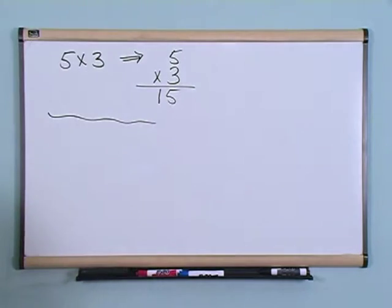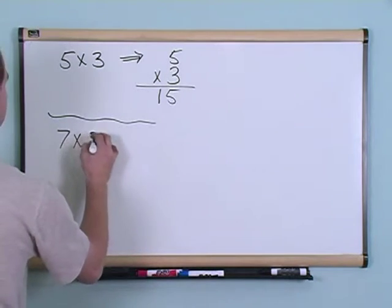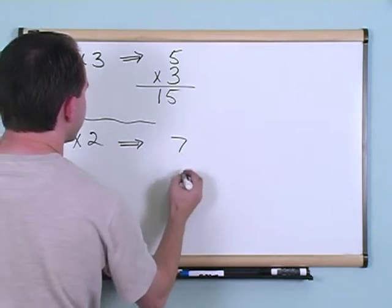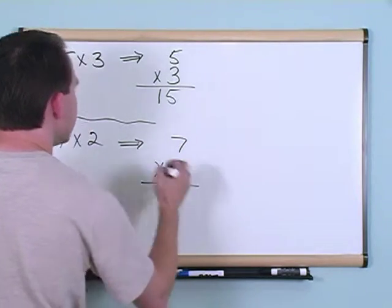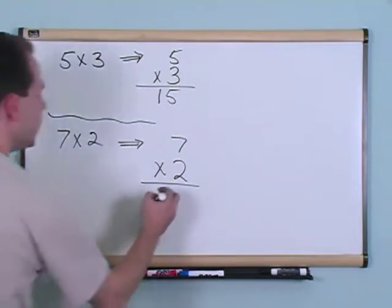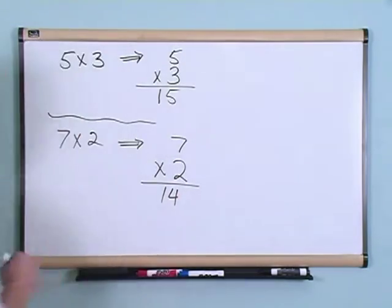Now, the next thing would be 7 times 2. That's the next problem. Again, it's two single digit numbers, so I'm just going to write the problem like this, and you should remember from your times tables, or look it up if you don't remember, or go review the section of the DVD, 7 times 2 is 14. So you're going to write that down.